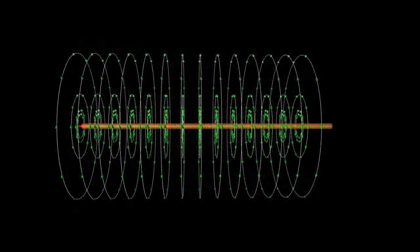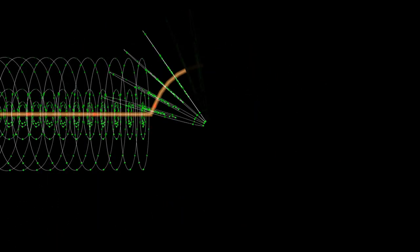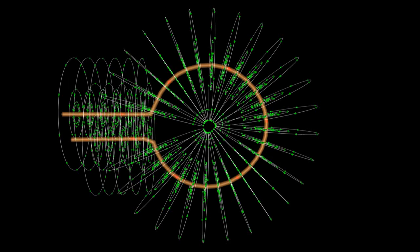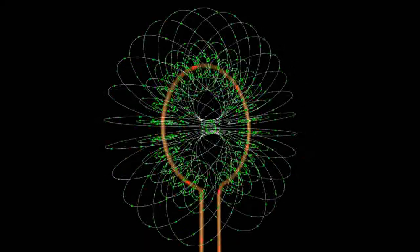Where this gets interesting is when we put a loop or turn in the wire. Now, when we pass current through this loop of wire, a magnetic field is generated with an orientation that looks like this.